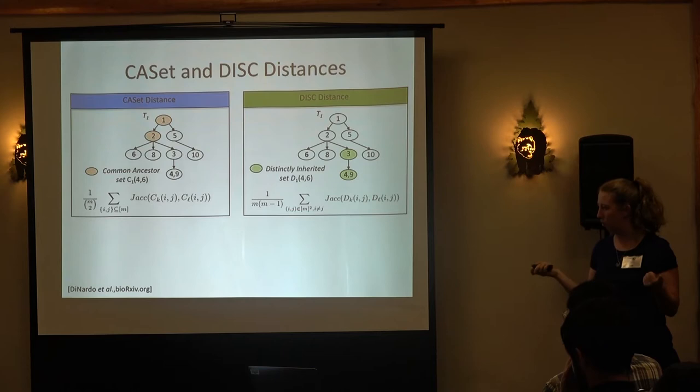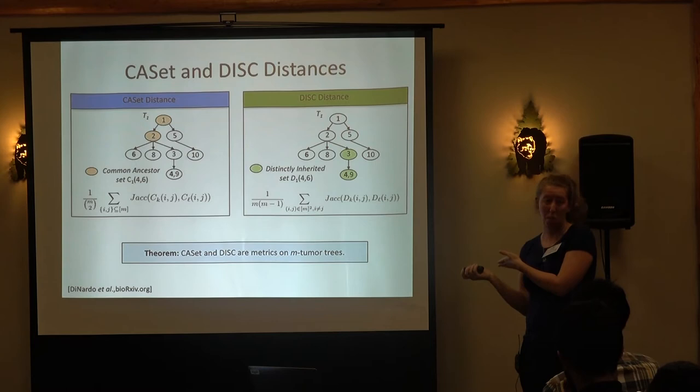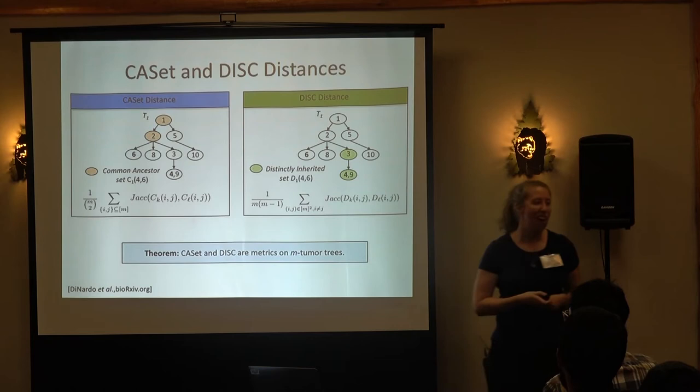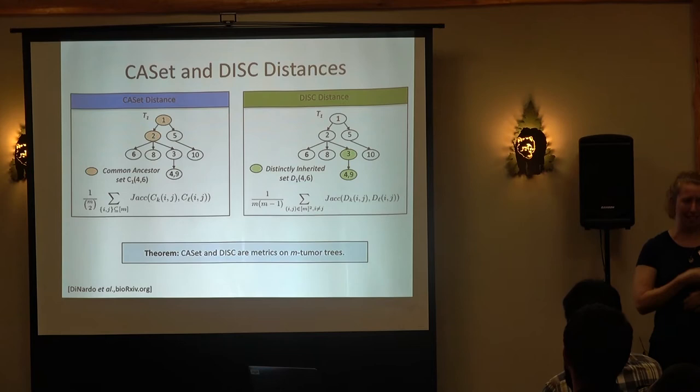We can show that both CASET and DISC are valid distance metrics on M-tumor trees, which is a nice property. But if you start thinking about applying this in the wild on real data, there are challenges to address.